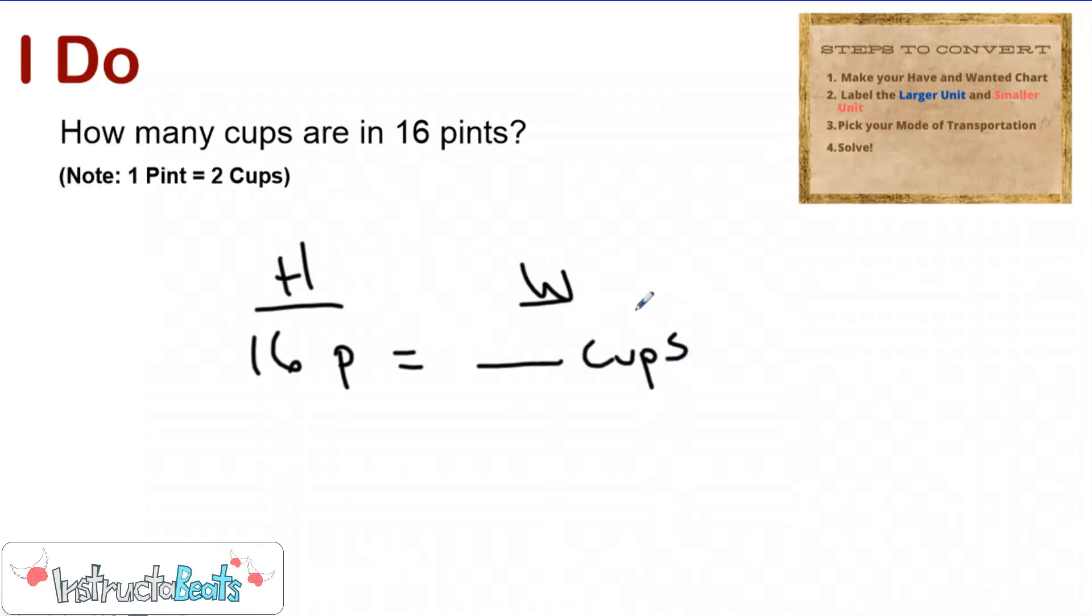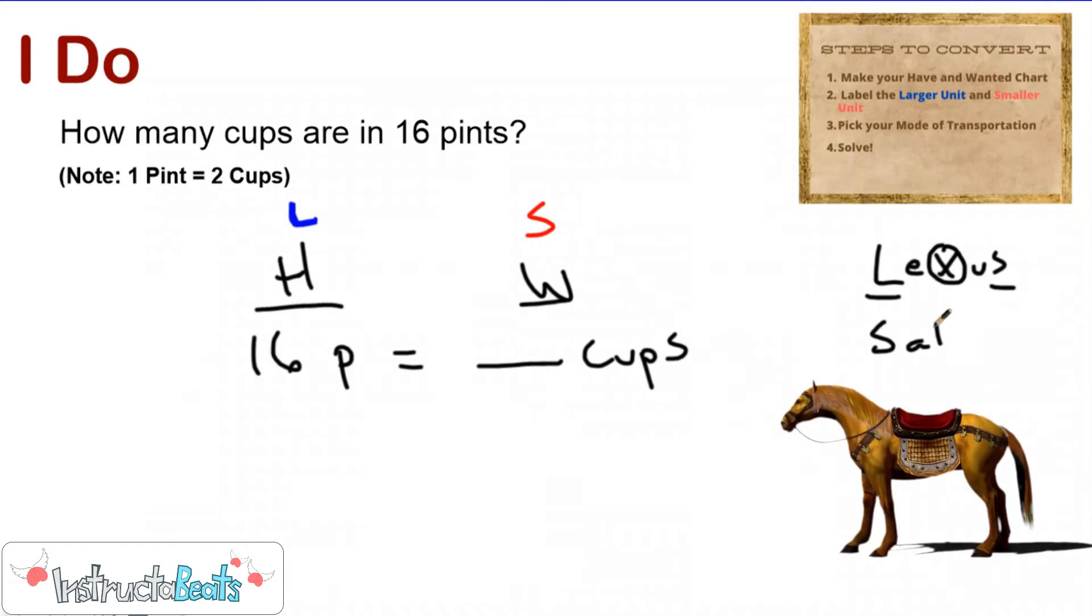That's what I mean by having my have and wanted chart. It's important that you do this because now we're going to label the larger unit. So one pint is bigger than one cup. And so I'm going to go ahead and put my larger unit right here, which makes my cups my smaller unit. And this is going to help me pick my mode of transportation because I'm either going to be taking a Lexus, which is larger unit to smaller unit, which means we're going to be multiplying, or I'm going to be taking a saddle, which is smaller unit to larger unit.